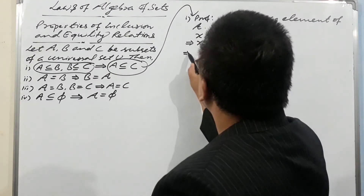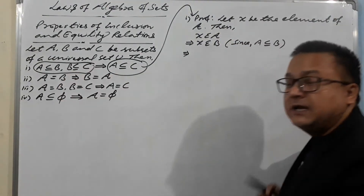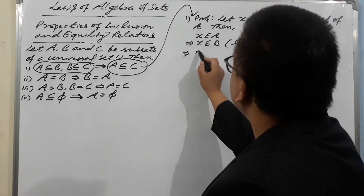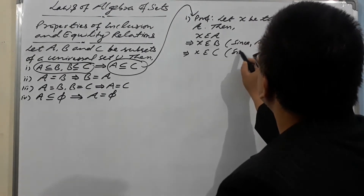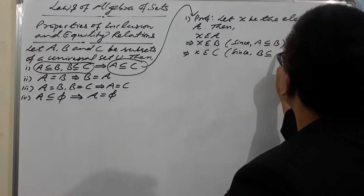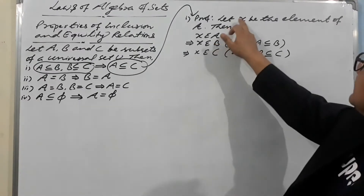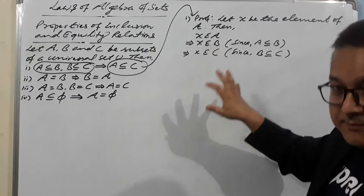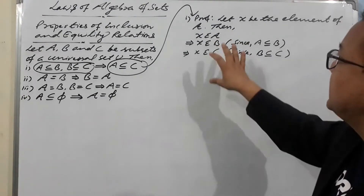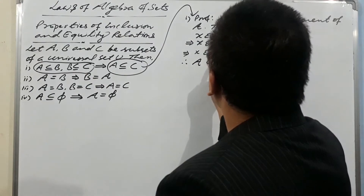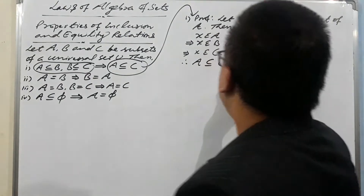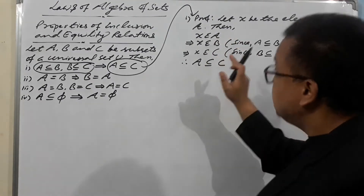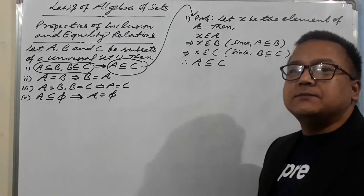Now, since B ⊆ C is also given, if X is an element of B, then X must be an element of C. So X ∈ B implies X ∈ C, since B ⊆ C. We started with X ∈ A and within a few steps we showed X ∈ C. Therefore A ⊆ C.